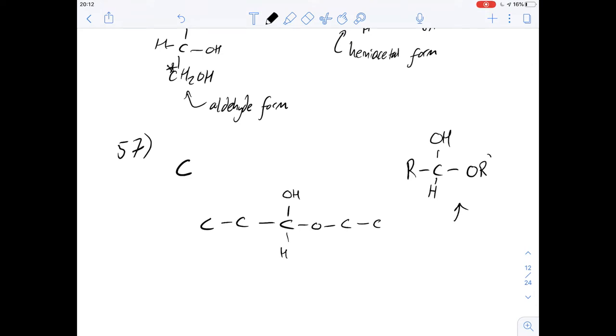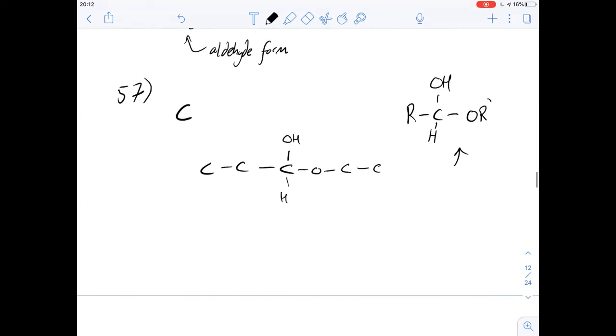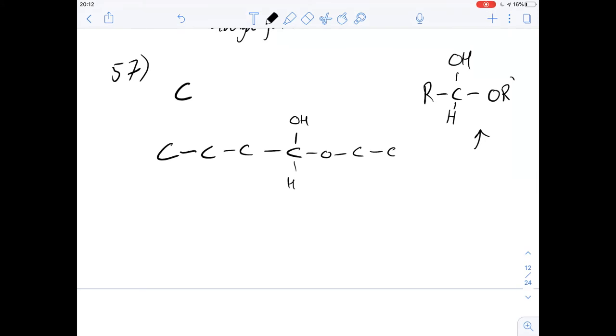58 says which of the following pairs of compounds can be used to form the hemiacetal that's given here. The difference between the one that we've just formed and the one they're asking us now is that there's an extra carbon atom on it.